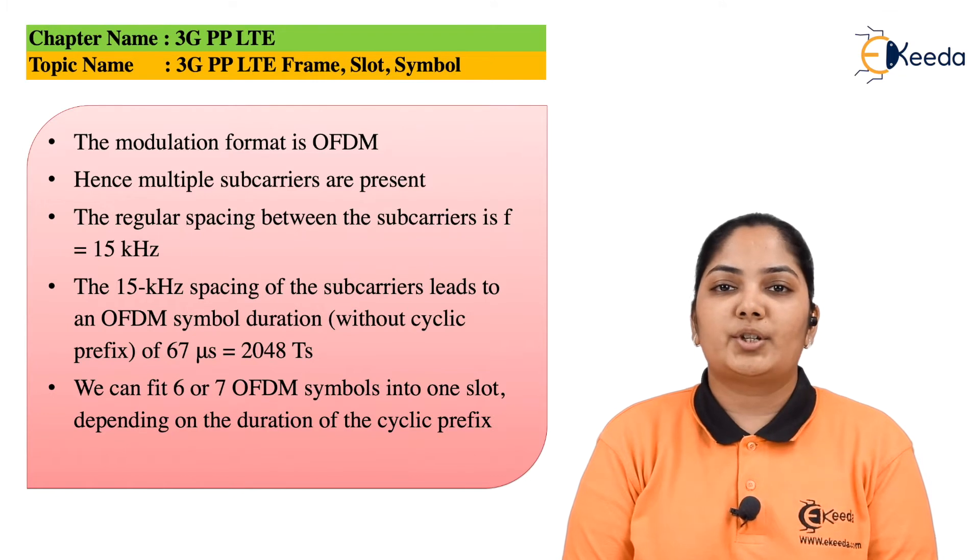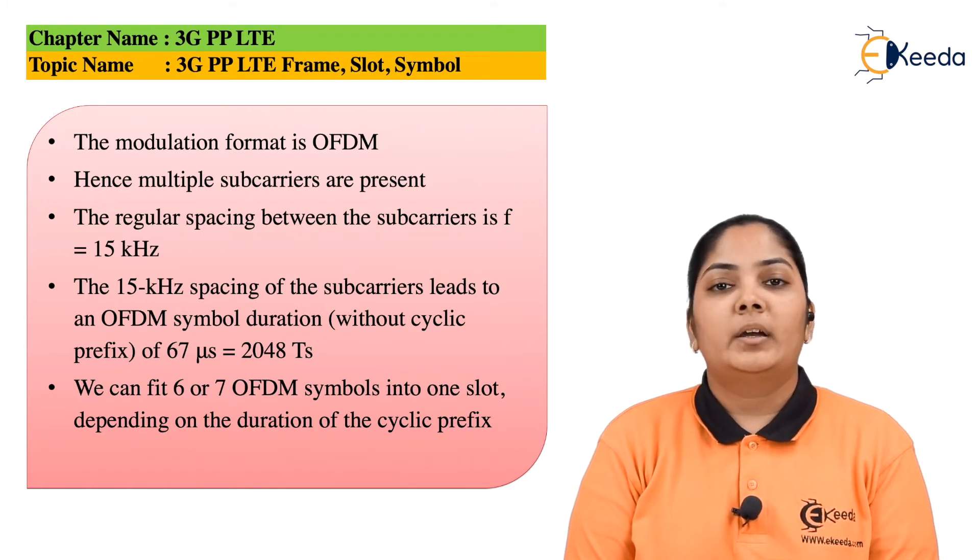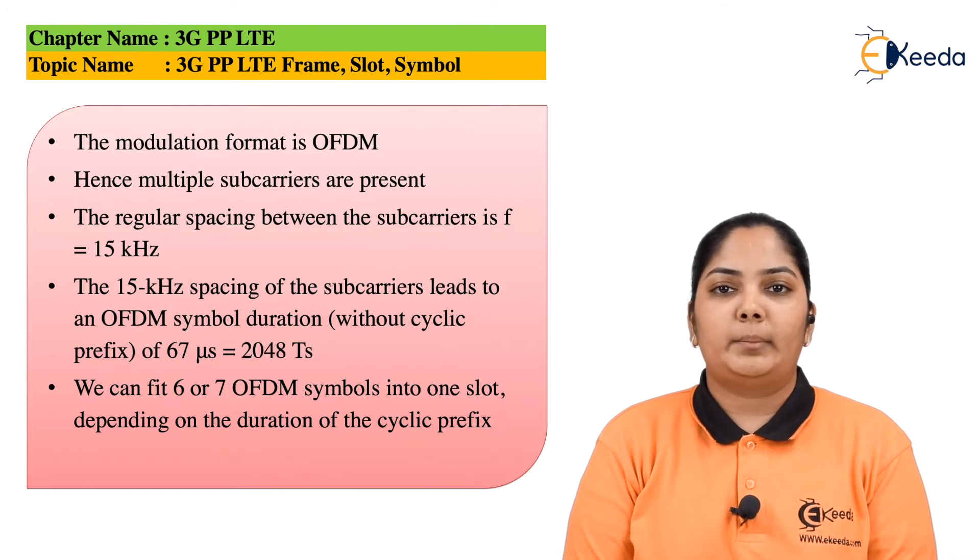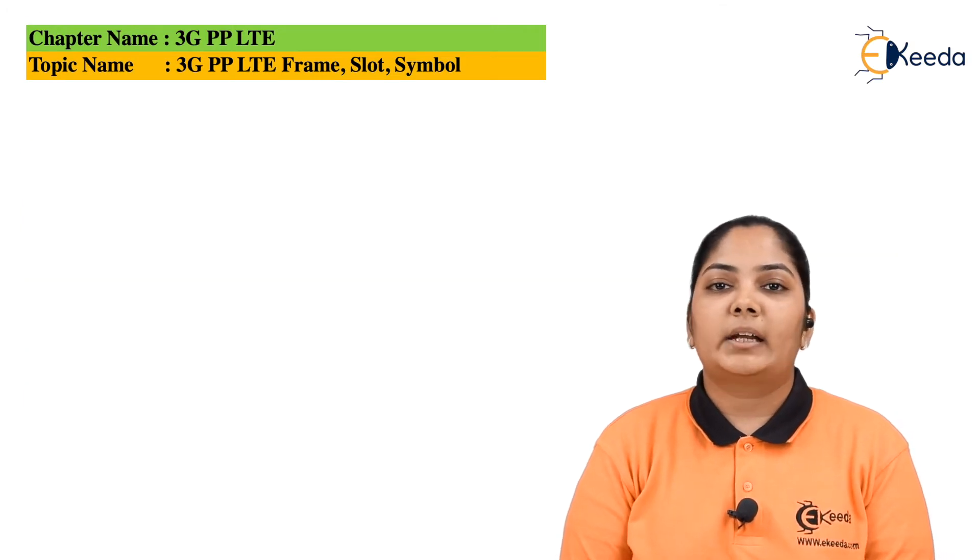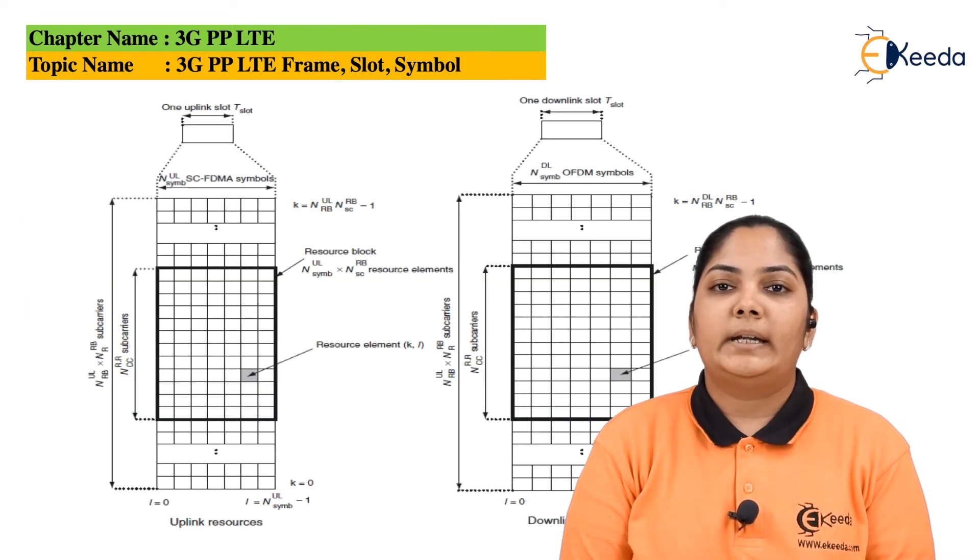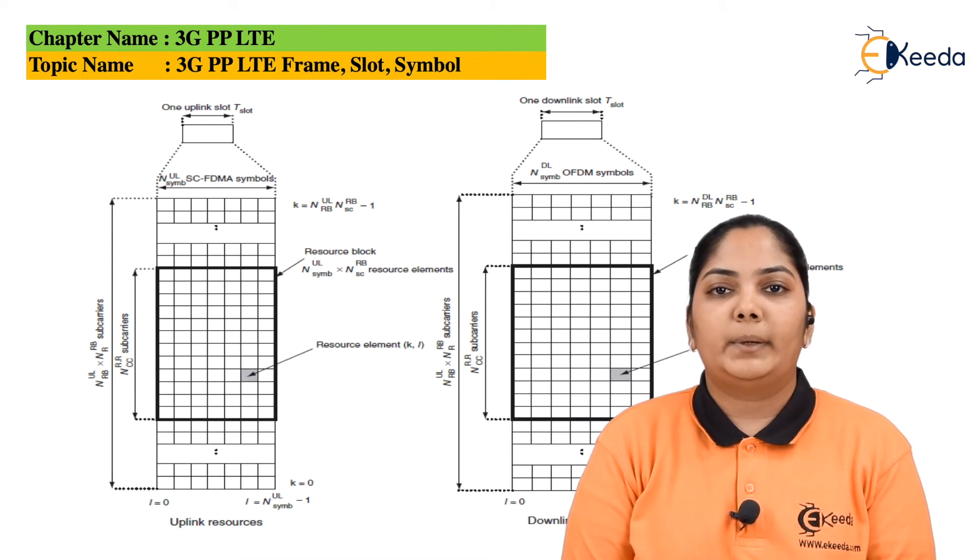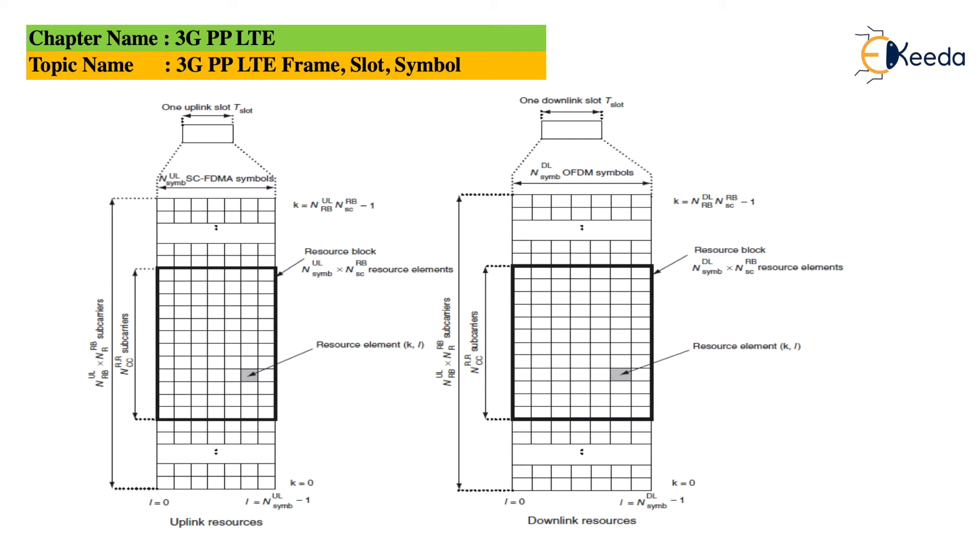One subcarrier for the duration of one OFDM symbol is called a resource element. We will be seeing what is the resource element in detail. In the next diagram, we can see how data has been transmitted in uplink as well as in downlink. If we see the left-hand side of the diagram, there is one uplink slot which is the time duration of T slot. In that, we are sending 6 or 7 symbols. N number of symbols could be sent, but here it is 6 or 7.